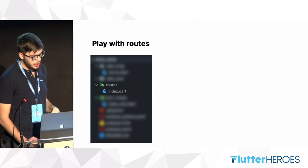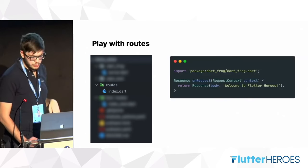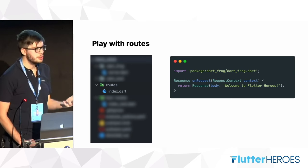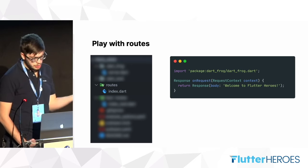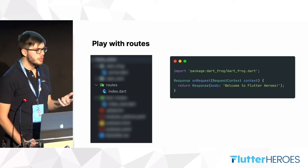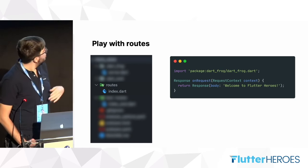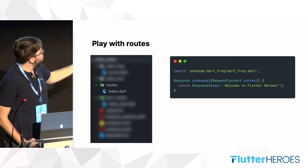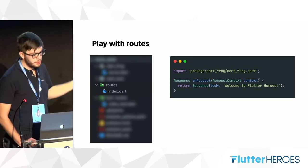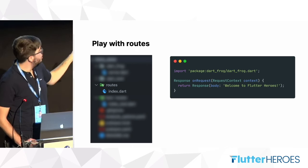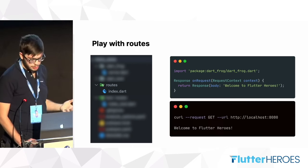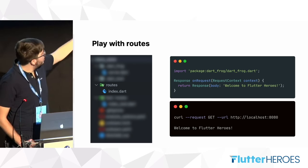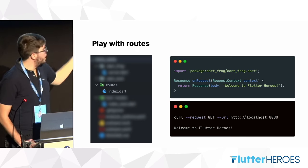If we take a look at the index.dart file, inside we can see there is an onRequest method that takes a request context as input and returns a response. This handler doesn't do anything special — it just returns a static response. If we reach this route with a request, as expected, the 'Welcome to Flutter Heroes' response will come back.